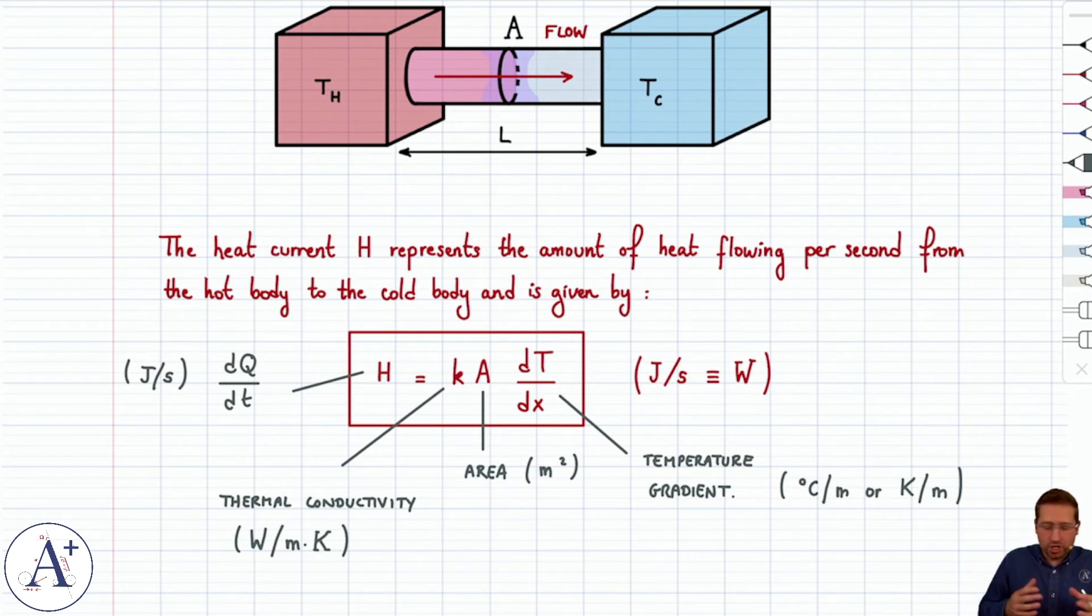And to get an appreciation of thermal conductivity, it's really how easily heat can flow through the material. Take a simple example. Let's say you go to the mountains and there's snow on the ground and you place a stick of wood and a metal ski pole in the snow. You bury them and you wait long enough that they're both at the same temperature because they're both buried in snow. When you pick them up with your bare hands, the ski pole, it's made of metal, feels colder.